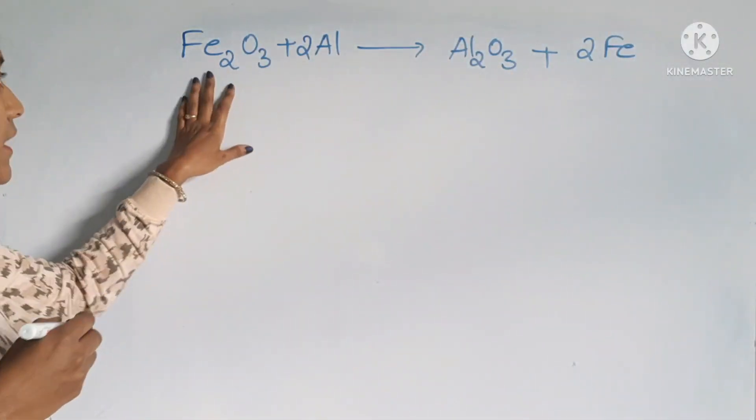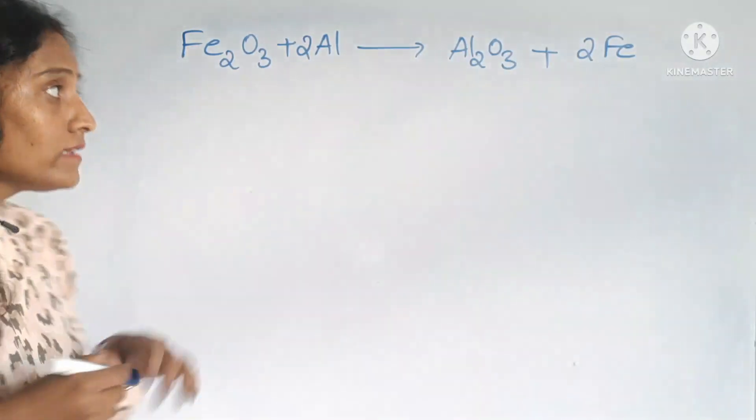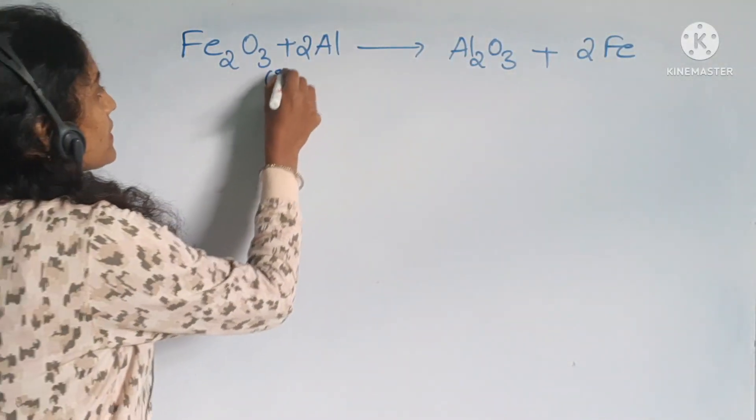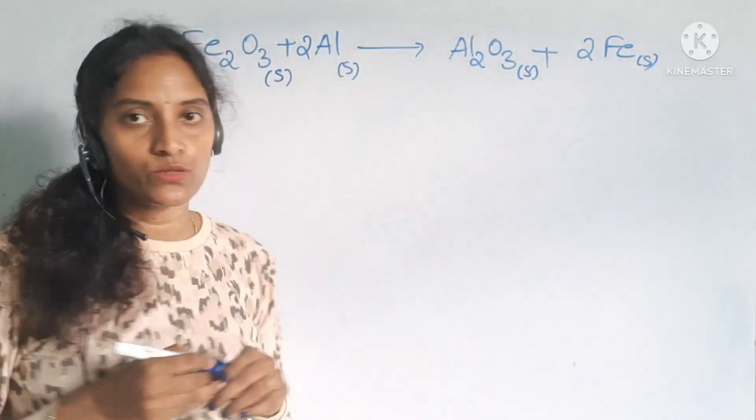Two atoms of iron, two atoms, three atoms of oxygen, two atoms of aluminum. And then you can write their physical states. All are in the form of solid state only. Now it becomes informative also.